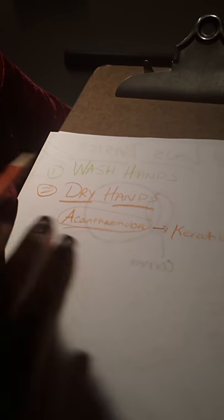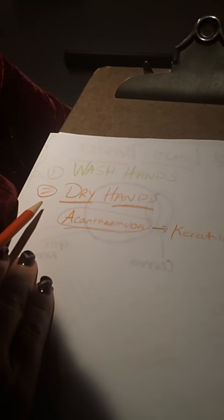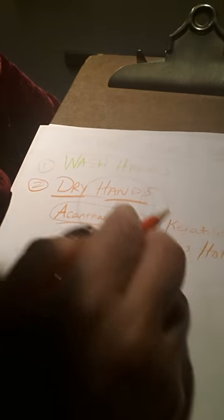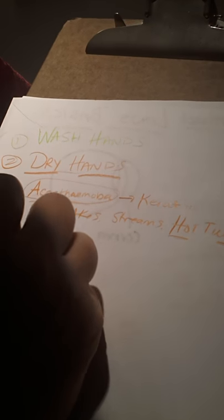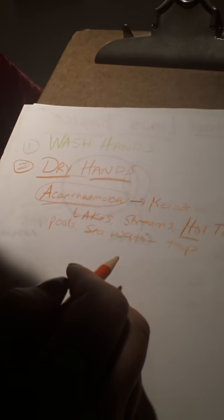Acanthamoeba is everywhere where water is found. Lakes. Streams. Hot tubs. That's a big one. Don't ever go into a hot tub with your contact lenses on. Swimming pools. Even sea water. Tap water. It's all over your bathroom.